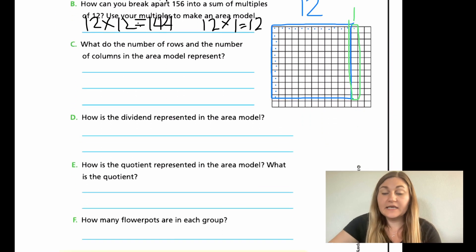For D, E, and F, I'm going to have this all be one group as well. For D, it says, how is the dividend represented in the area model? And for this, you do have to know the vocab for dividend. And then E is, how is the quotient represented in the area model? And then what is the quotient? So, that's two questions. And then that second question is going to match. The same answer for F is how many flower pots are in each group. So, go ahead and try D, E, and F now.